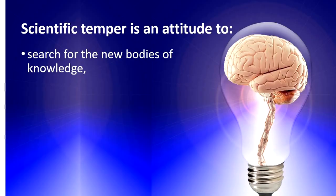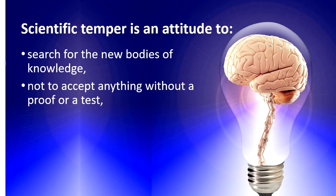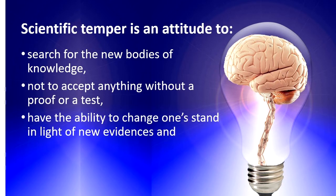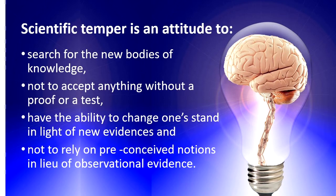If you analyze Malcolm's definition of scientific temper, you can point out a few important characteristics: things should be accepted for reason and not as faith; a person should stress on investigation and ask for proof without any bias and prejudice. Scientific temper is an attitude to search for new bodies of knowledge and not to accept anything without a proof or a test. A person with scientific temper has the ability to change their own stand in the light of new evidences and not to rely on preconceived notions — there is always more importance given to observational evidences.